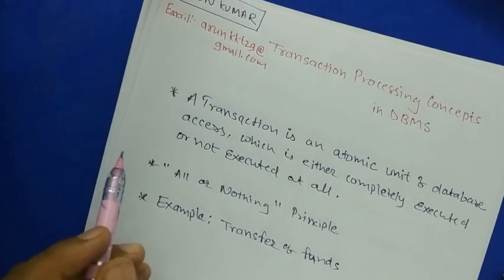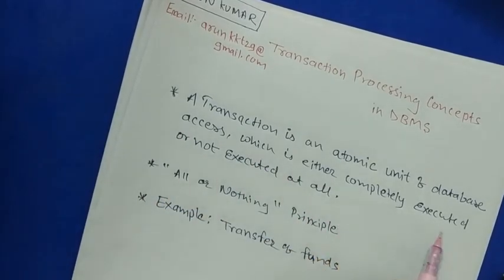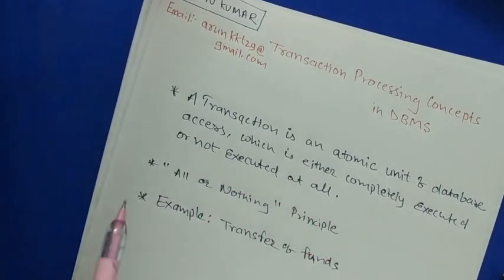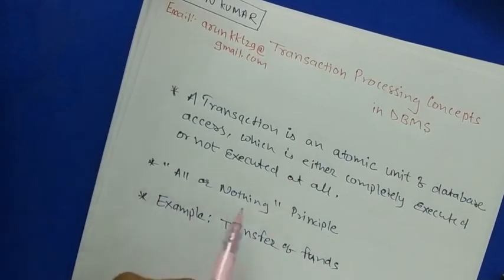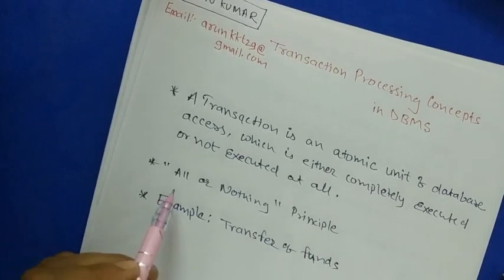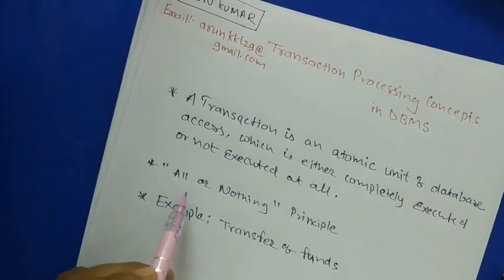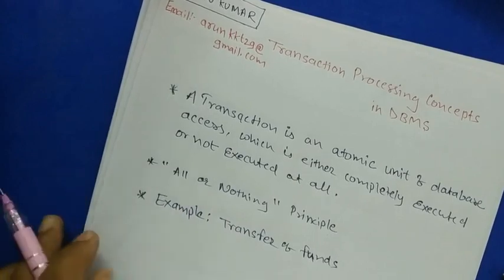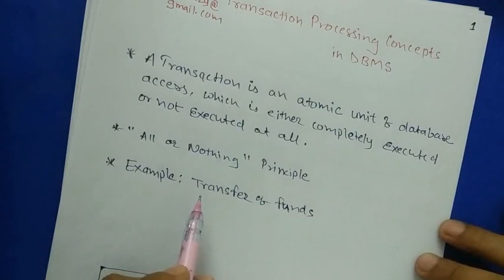A transaction is an atomic unit of database access which is either completely executed or not executed at all. It follows one principle: all or nothing. This means all of the instructions of the transaction will execute, or none of the instructions of the transaction will execute at all.